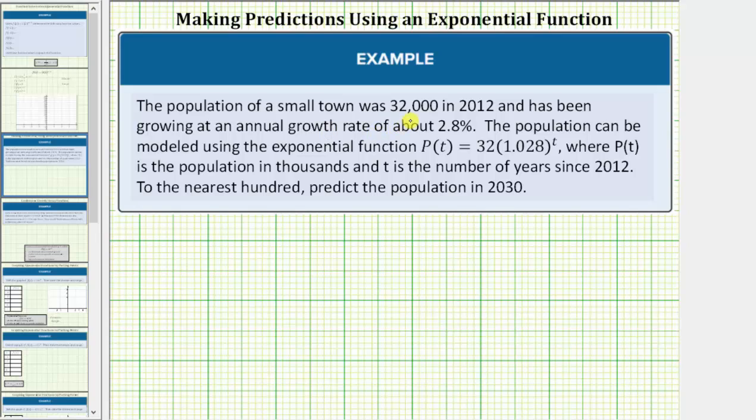The population of a small town was 32,000 in 2012 and has been growing at an annual rate of about 2.8%. The population can be modeled using the exponential function p(t) = 32(1.028)^t, where p(t) is the population in thousands and t is the number of years since 2012.